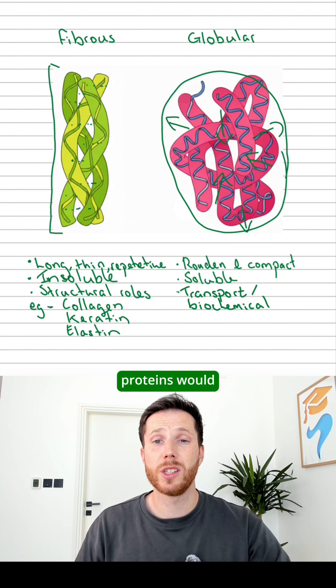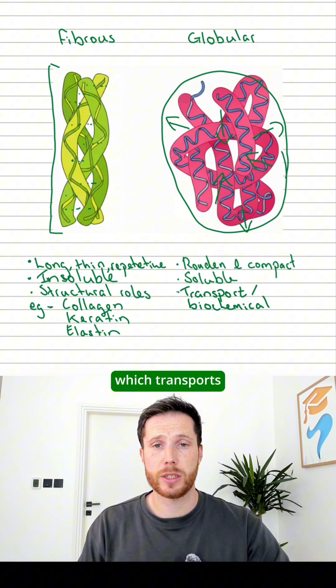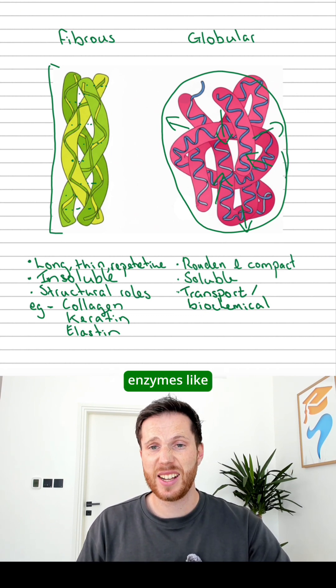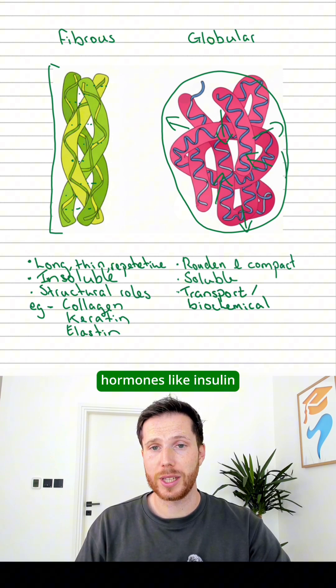So examples of globular proteins would include things like hemoglobin, which transports oxygen in the blood, enzymes like amylase, or hormones like insulin.